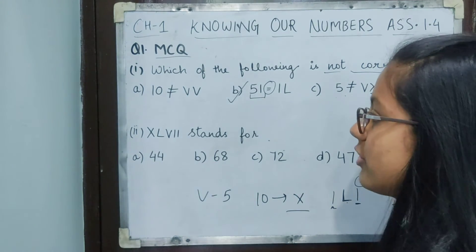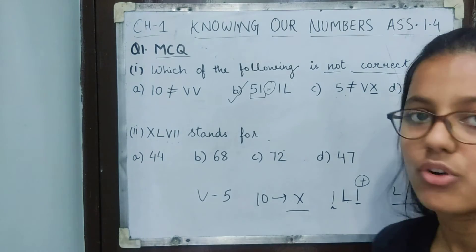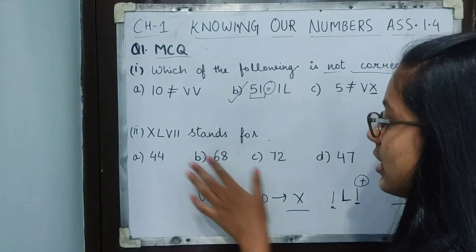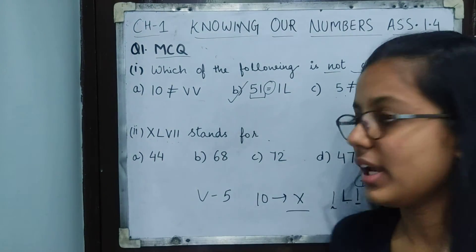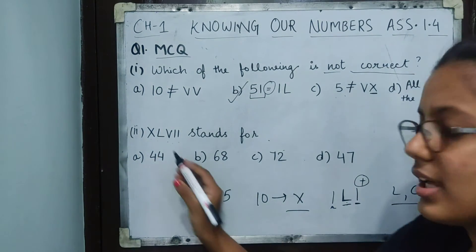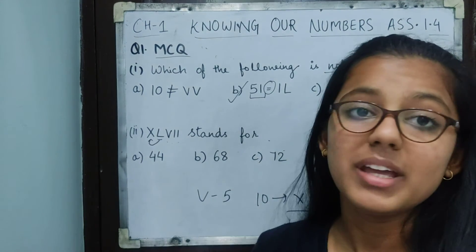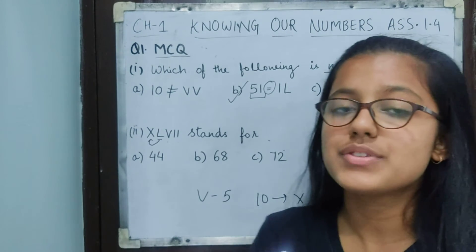Coming to the second question: XLVII stands for what? We have to calculate which number it equals. L, as I just told you, is 50.